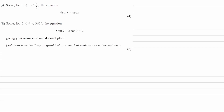We're trying to solve part 1: 4 sine x is equal to sec x in the interval 0 to pi over 2. The first step would be to change sec x into 1 over cos x.